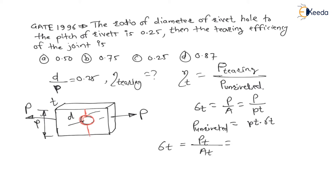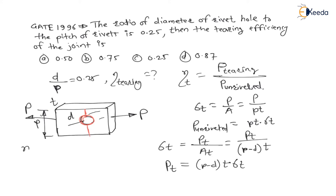Therefore, the tearing area is p minus diameter, all into t. So the tearing force is equal to (p minus diameter) into thickness into sigma t. And tearing efficiency equals tearing force divided by force on the unriveted plate.